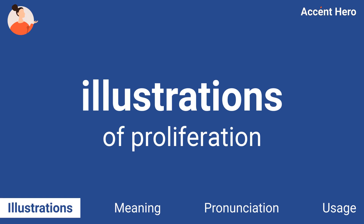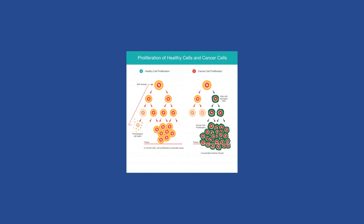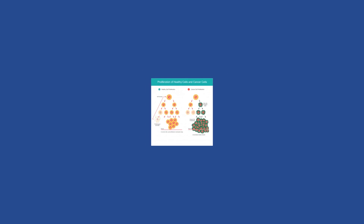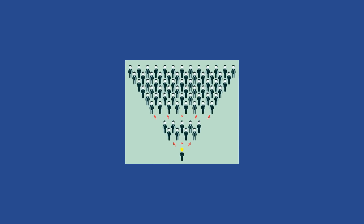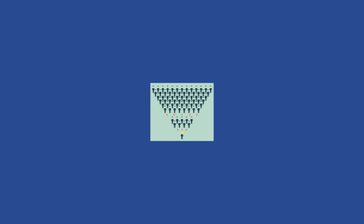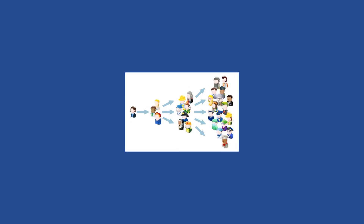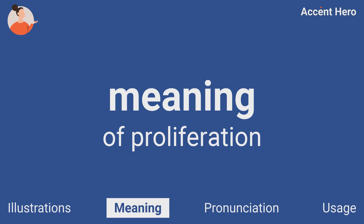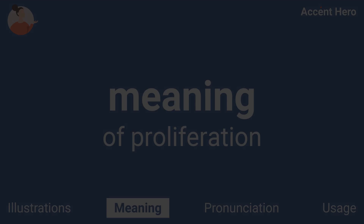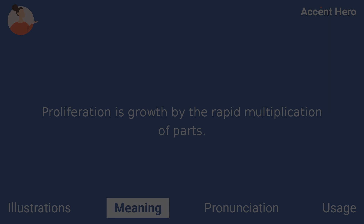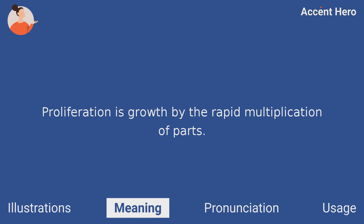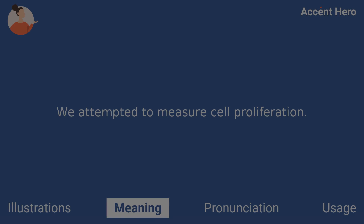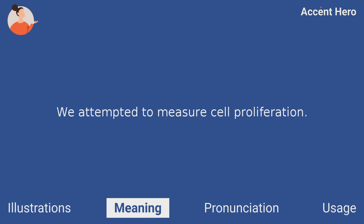Illustrations. Meaning: Proliferation is a noun. Proliferation is growth by the rapid multiplication of parts. For example, you can say, "We attempted to measure cell proliferation."